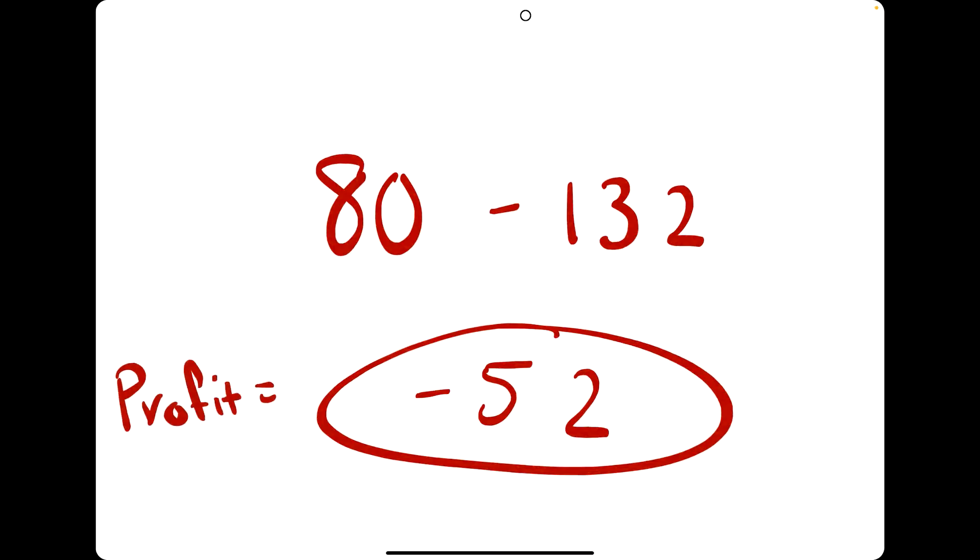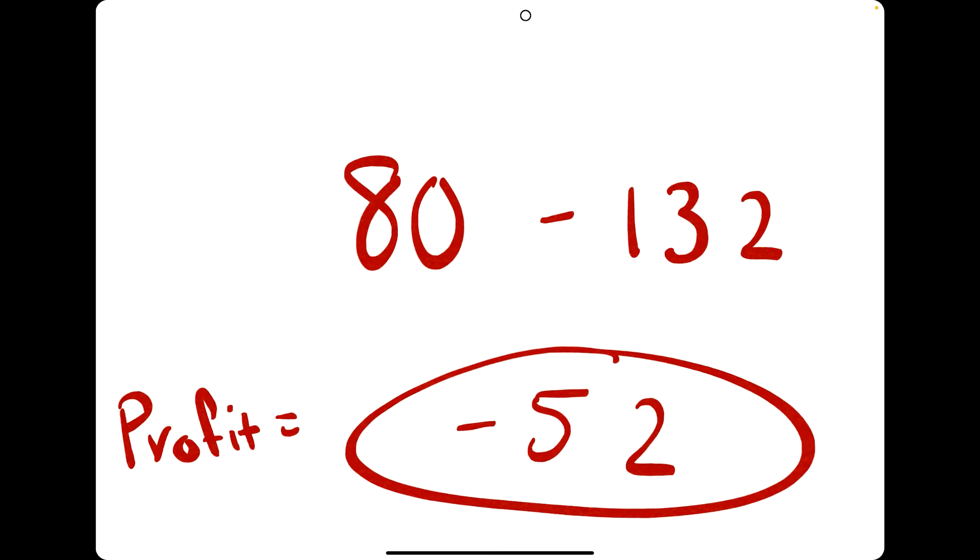In other words, you have a profit of negative $52. So in reality, you have a loss of $52. But the nice thing is you've just derived the profit formula. Profit equals revenue minus cost.